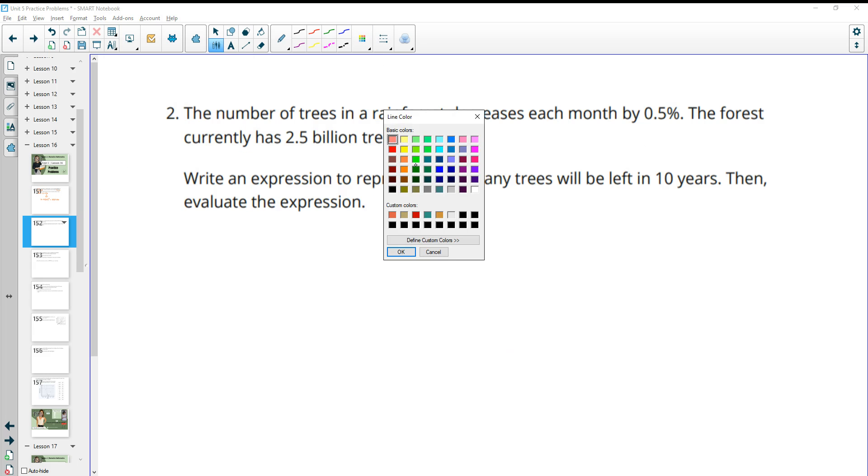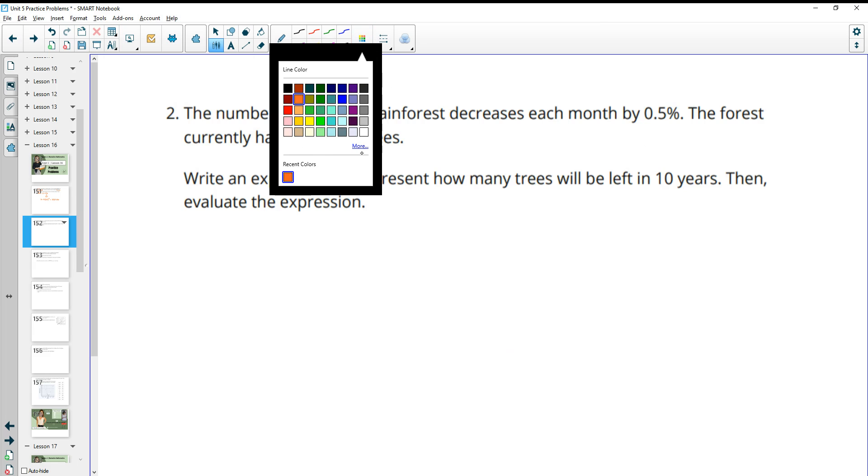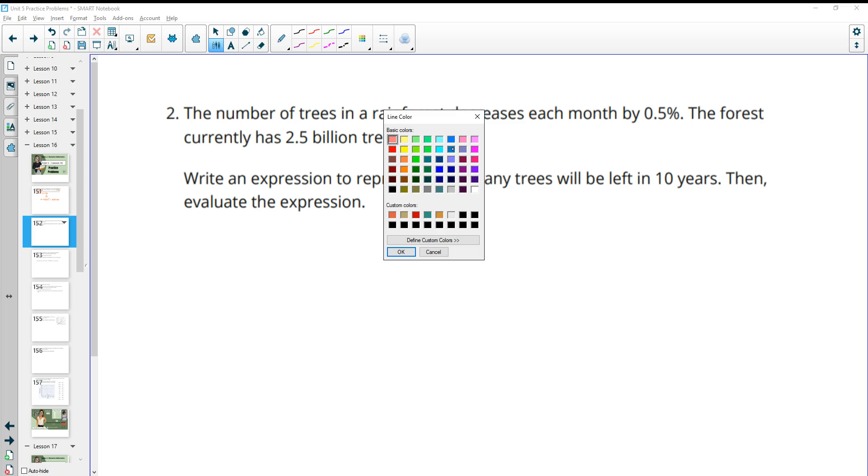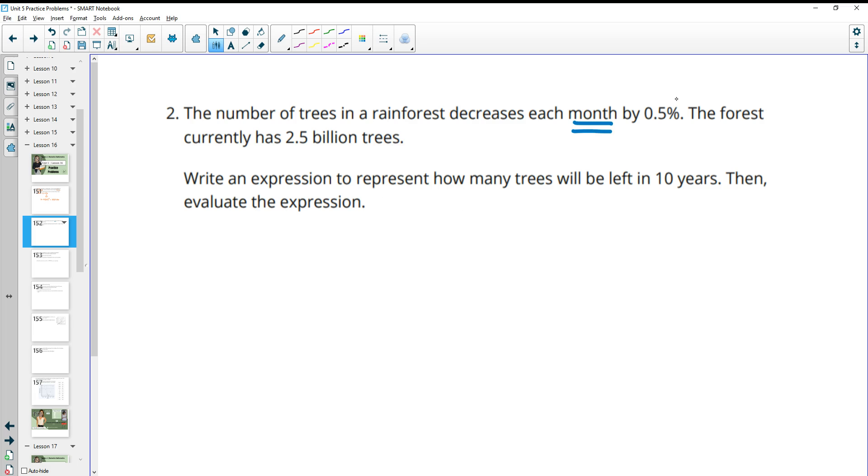Number two, the number of trees in a rainforest decreases by 0.5% each month. The forest currently has 2.5 billion trees. Write an expression to represent how many trees will be left after 10 years. One thing you want to see here is that there's a mismatch in the time. This one is saying it decreases per month and this is saying in 10 years.